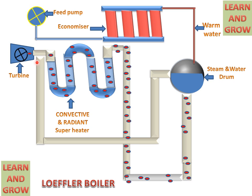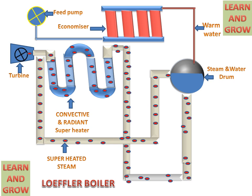This superheated steam will strike on the turbine rotor and the turbine will start rotating. Some part of the superheated steam we will take back to the boiler for increasing the efficiency of the boiler, and this superheated steam will be used for making heated water and making steam. This is the working of the Loeffler boiler — this cycle will be repeated again and again and this steam works for the turbine.